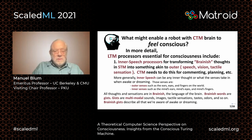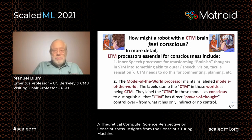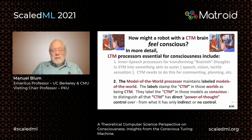Brainish words are gists. Gists are multimodal sounds, images, tactile sensations, tastes, odors, and so on. Brainish gists describe all that we are aware of, awake or dreaming. The model of the world processor maintains labeled models of the world. The labels stamp the CTM in those worlds as being CTM. They label the CTM in those models as conscious, to distinguish all that the CTM has direct power-of-thought control over from what it has only indirect or no control over.